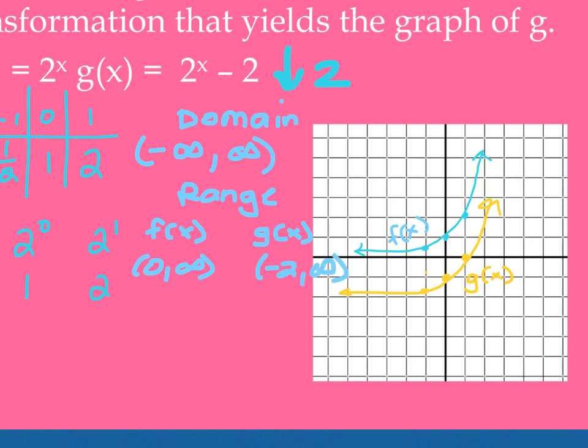Remember, every time that there's a vertical shift, which is what's happening here, my range is going to change. Or if there's a reflection over the x, it's going to change.